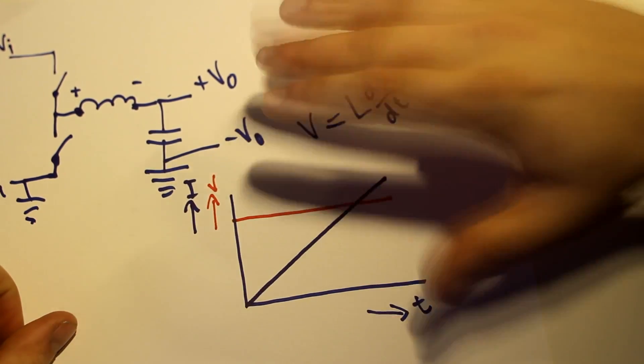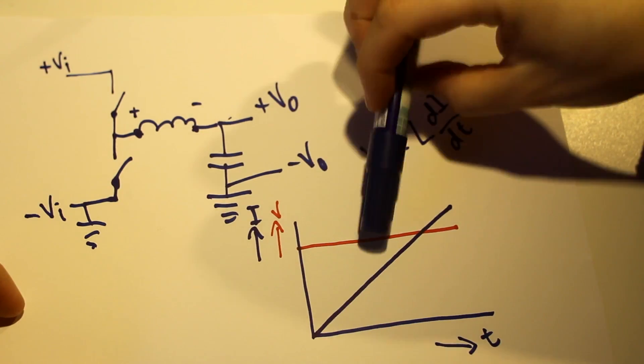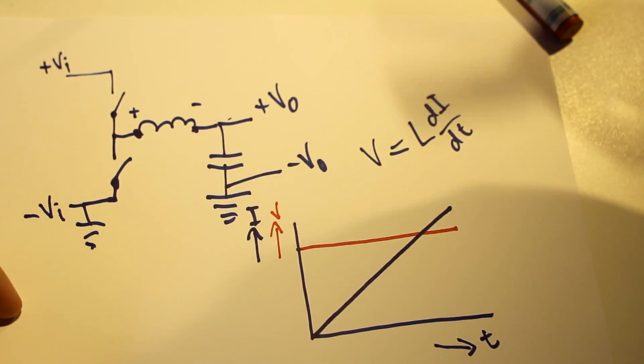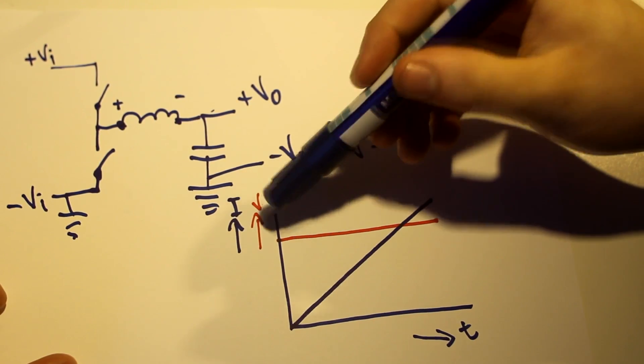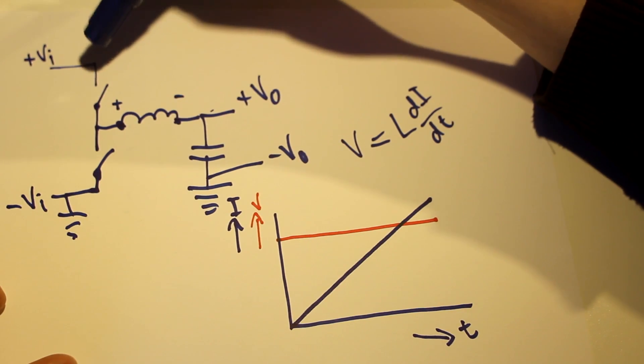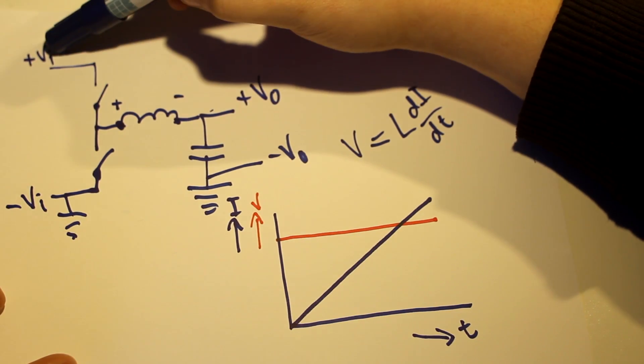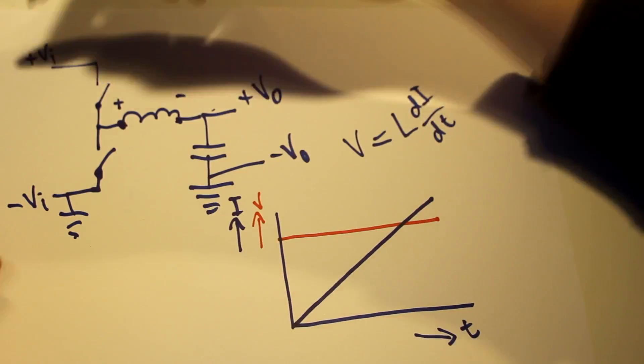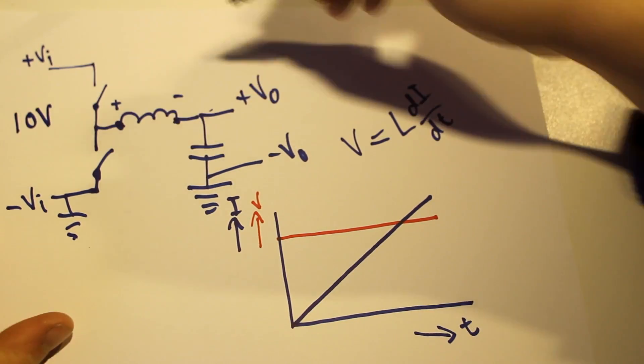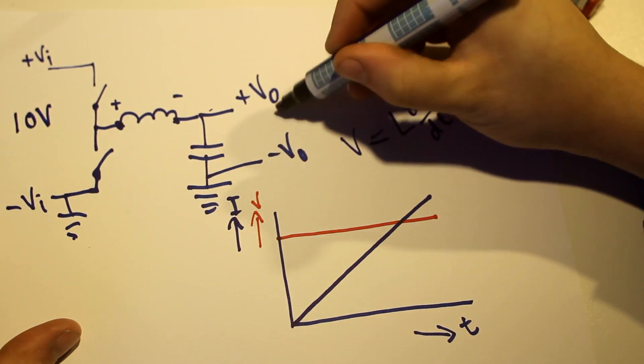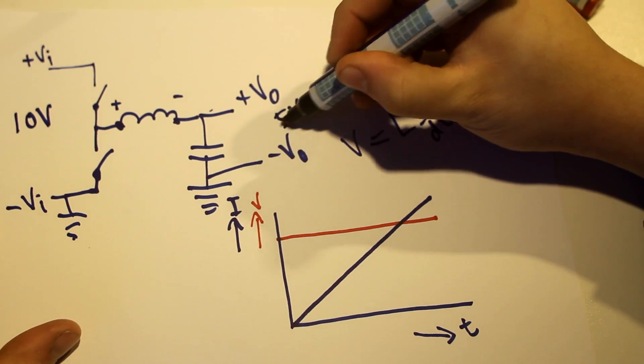So what can we do with this? Well, what we can do is, let's see, so we have an input voltage. For instance, let's say we have 10 volts here and we have 5 volts here.